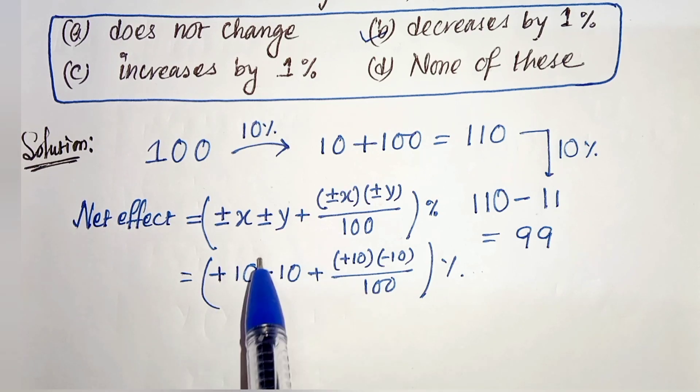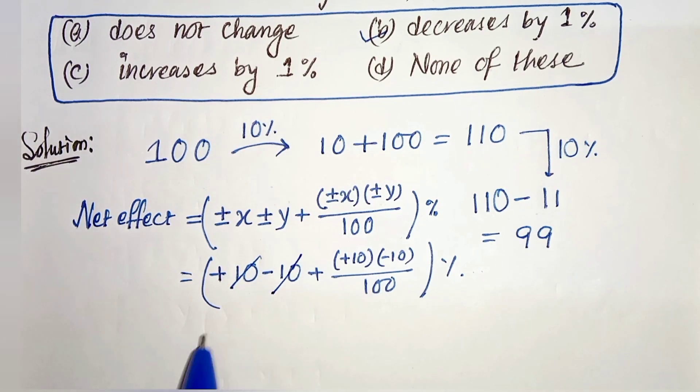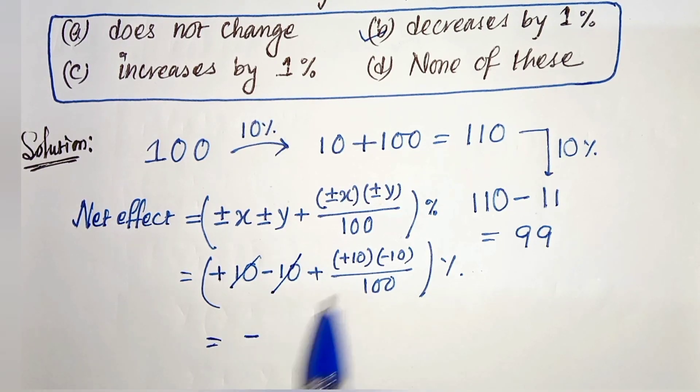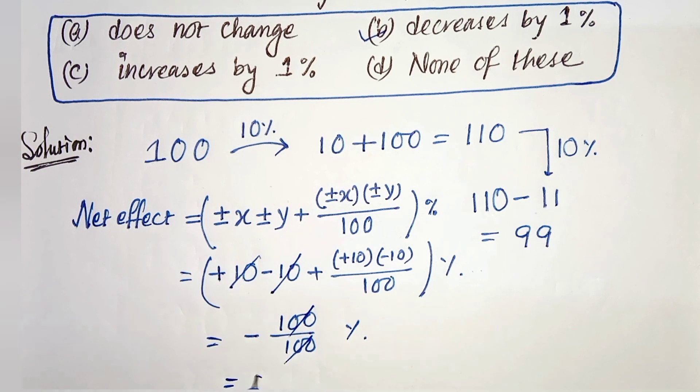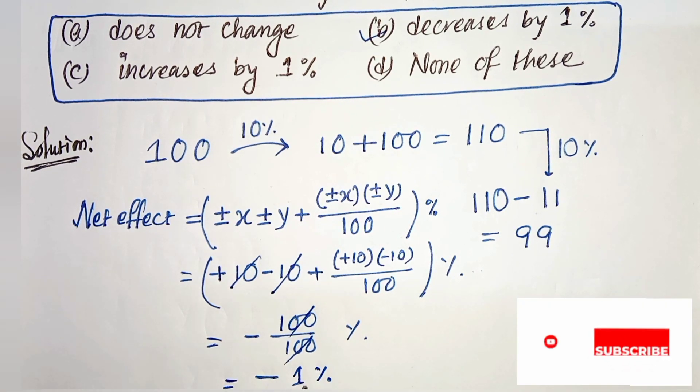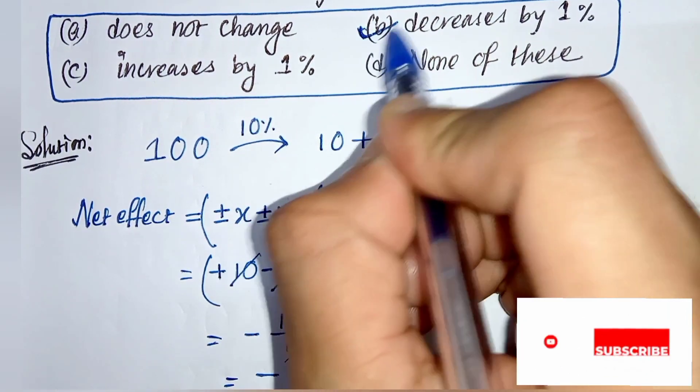Here we can cancel out +10 and -10, and here we will get -10 times 10 is 100 divided by 100%, so 100 and 100 gets cancelled, so -1%. That means the number decreases by 1%, that is option B is the correct one.